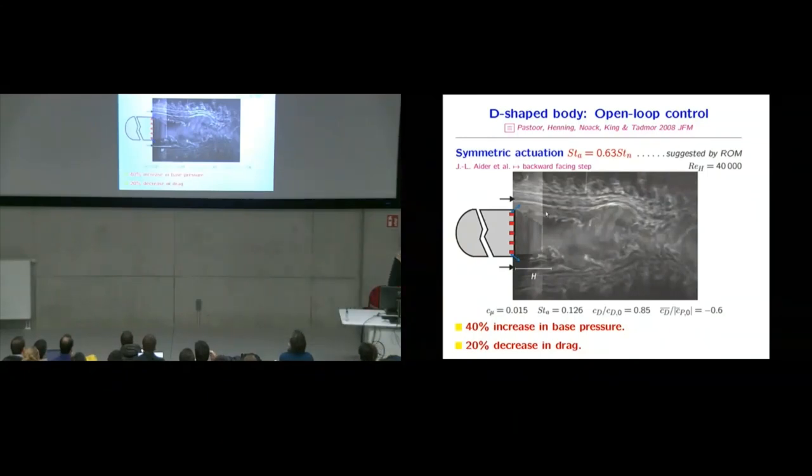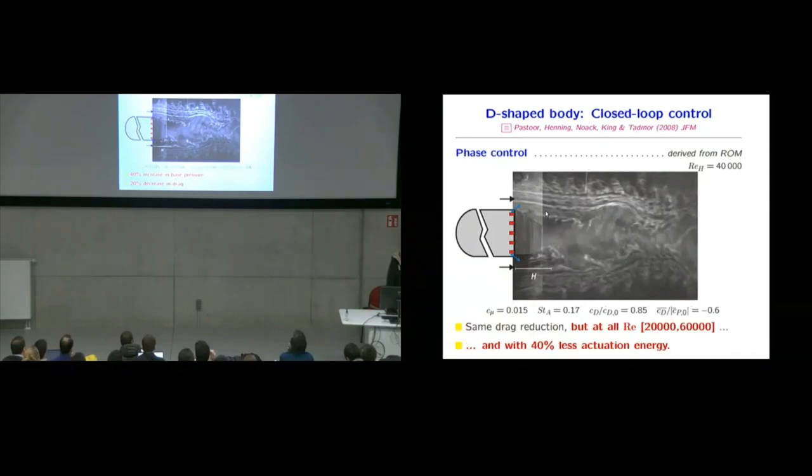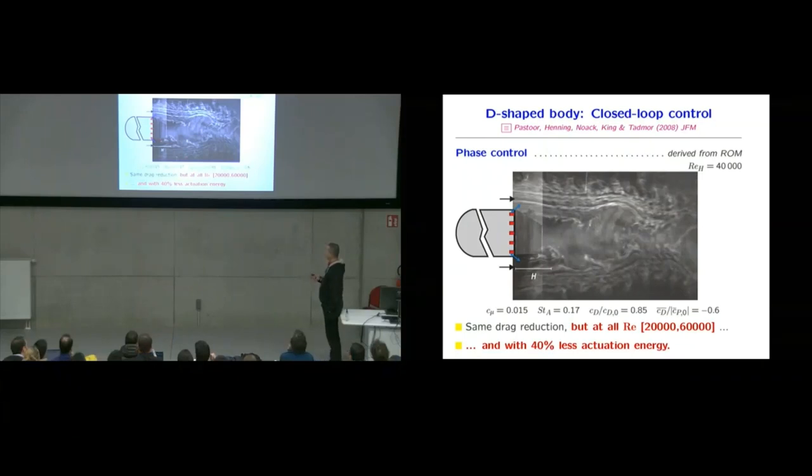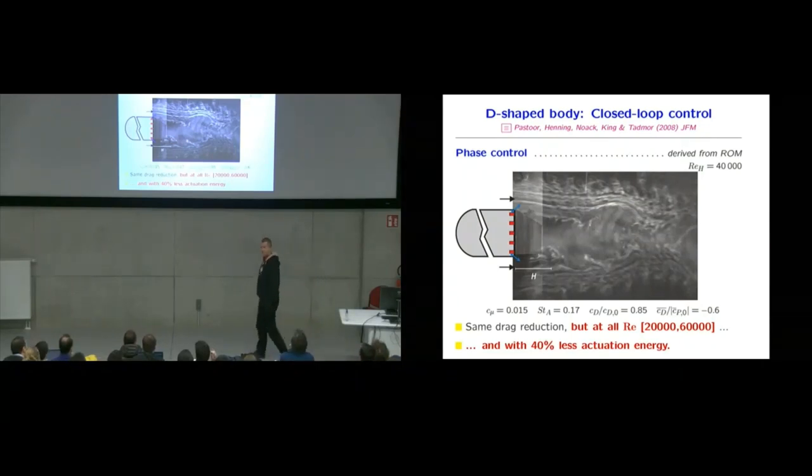So this is one of the reasons why we may want to use feedback. In the next step, we do feedback control, phase control, something which is similar to what Scott was teaching. And now we get the same drag reduction, but now for all Reynolds numbers.